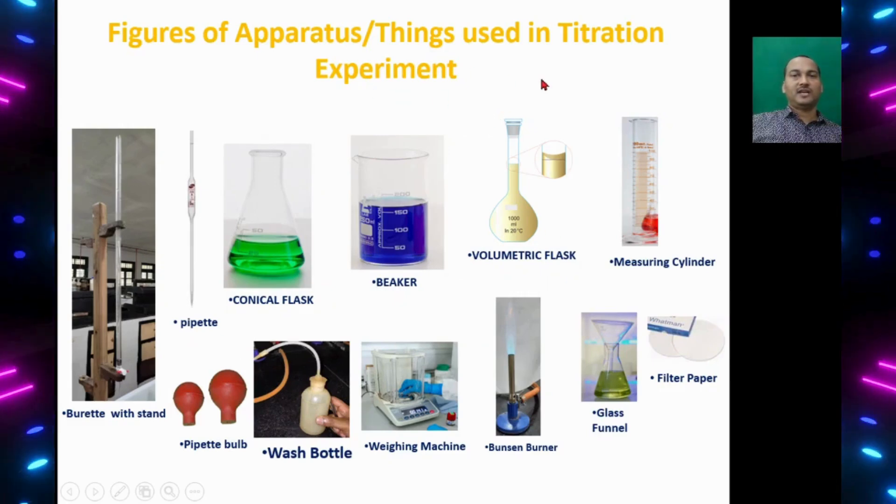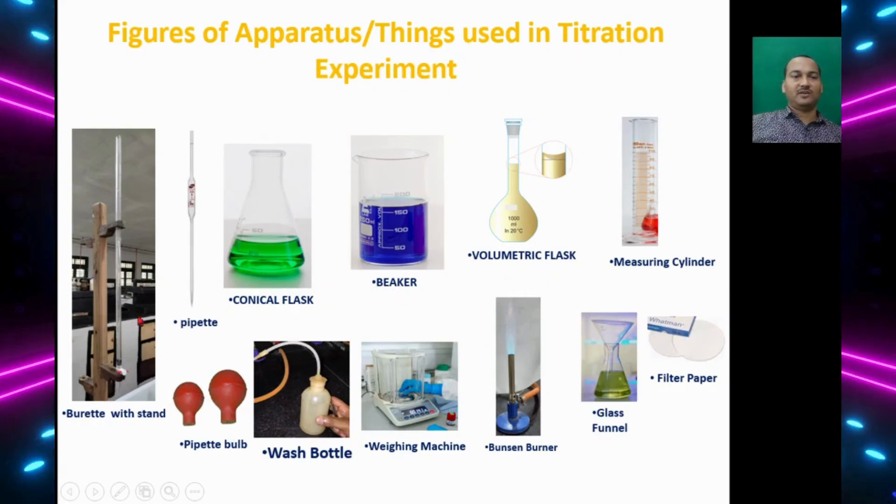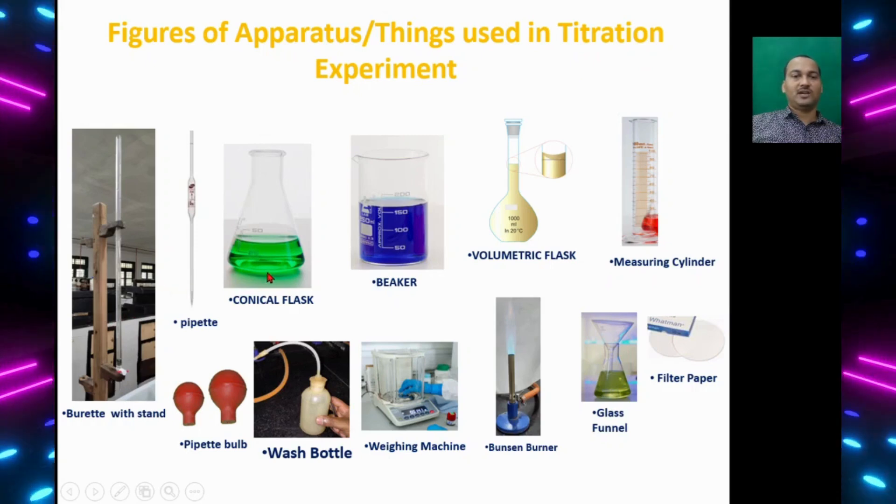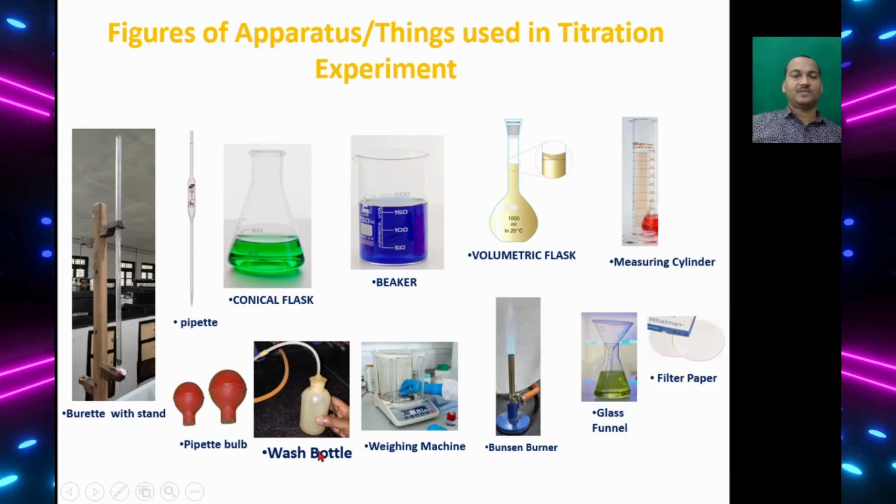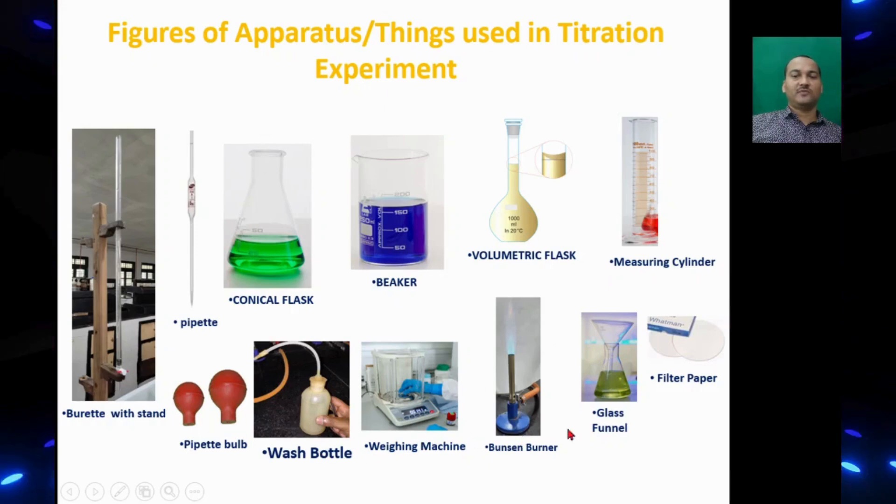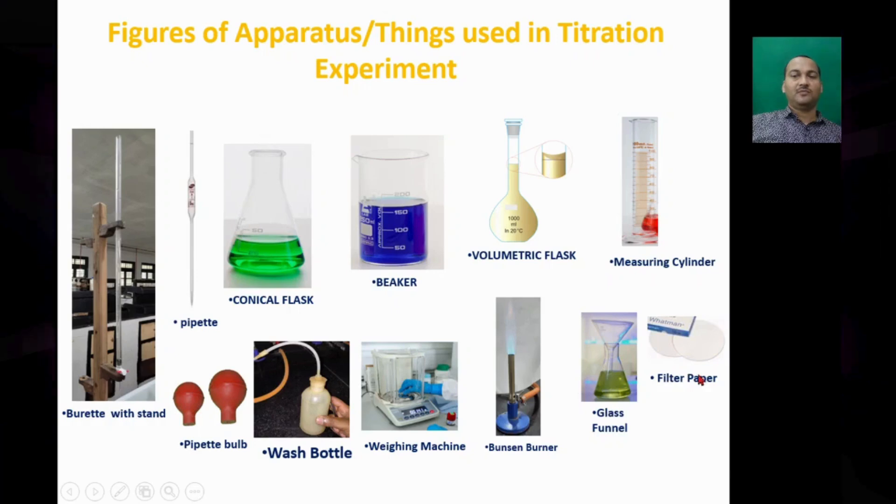Here are some apparatus that are used in titration experiment: Buret, buret stand, pipette, conical flask, beaker, volumetric flask, measuring cylinder, pipette ball, wash bottle, weighing machine, Bunsen burner, glass funnel, filter paper.